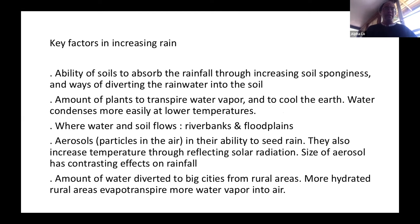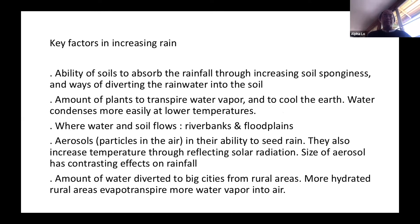The key factor in increasing rain is the ability of soils to absorb rainfall, which you can improve by increasing soil sponginess. Permaculture techniques like swales, ponds, and dead branches help divert rainfall into the soil. The amount of plants that transpire water vapor also matters, as plants cool the earth and water condenses more easily at lower temperatures. Riverbanks and floodplains are also key — water flowing to those areas feeds the plants there, which then transpire back up to create rain.